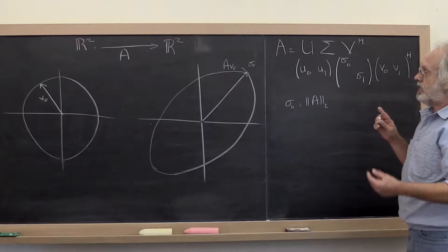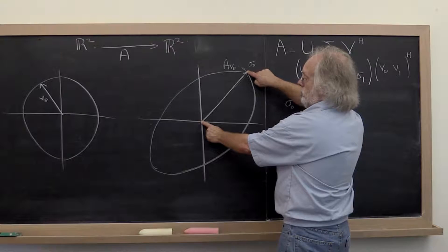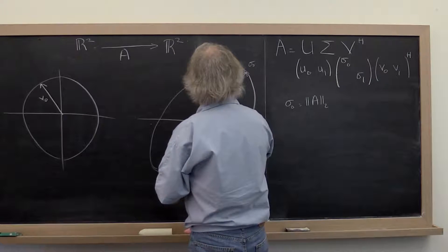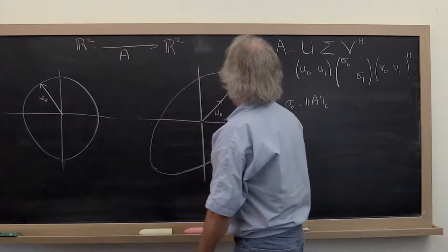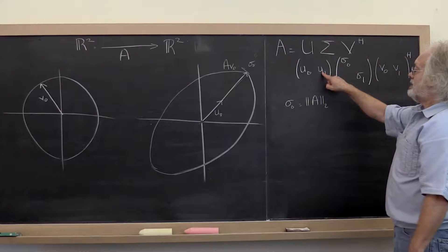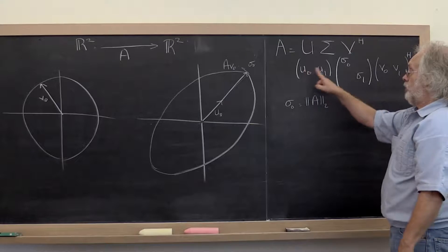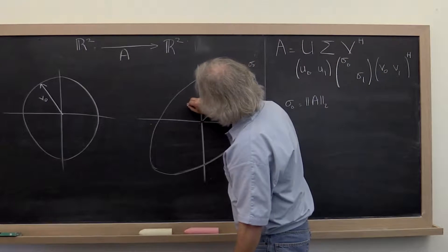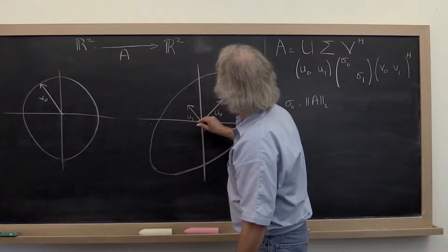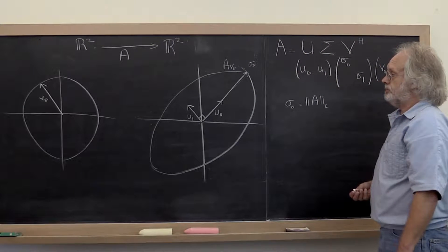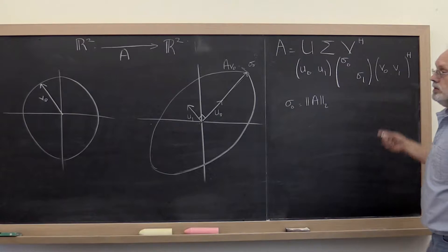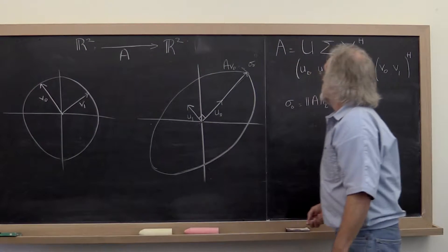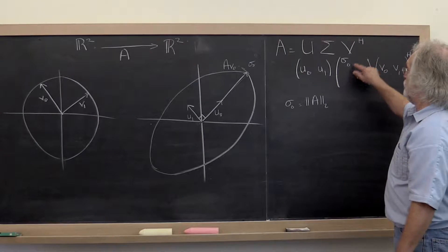We then pick U0 in that direction but of unit length — that is U0. We then fill out U with an orthonormal basis, finding another vector of unit length, U1, which must be perpendicular, orthogonal. Similarly, we filled out V1 here. And this became our submatrix B, and we proved that those entries had to be zero.